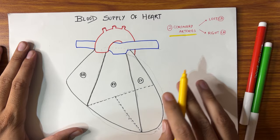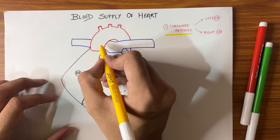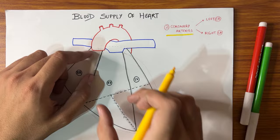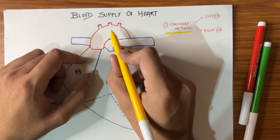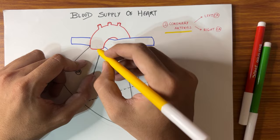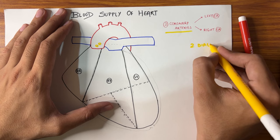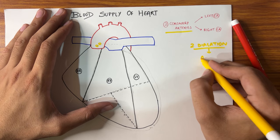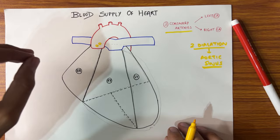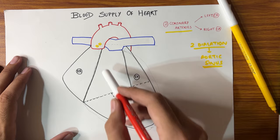Where do the coronary arteries come from? I will specify the ascending aorta. The ascending aorta comes out of the left ventricle, then we have the arch of aorta and then the descending aorta. We have two dilations on the ascending aorta which we call aortic sinuses. These aortic sinuses give rise to our coronary arteries. One is the anterior aortic sinus from which arises the right coronary artery, and one is the posterior medial sinus from which arises the left coronary artery.